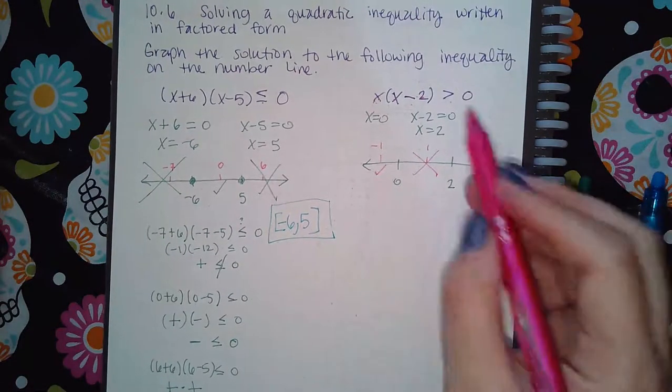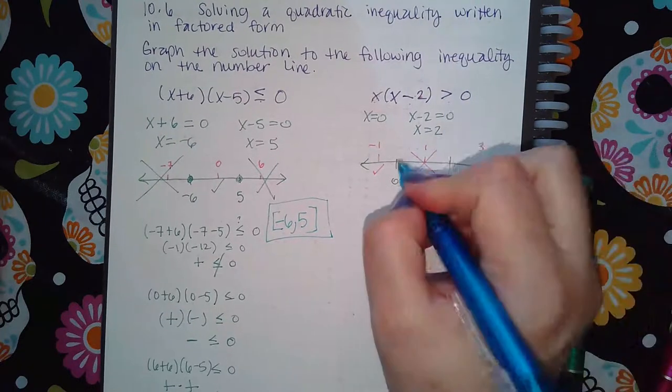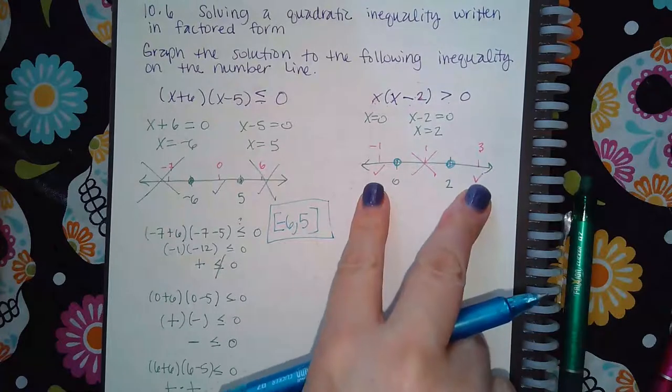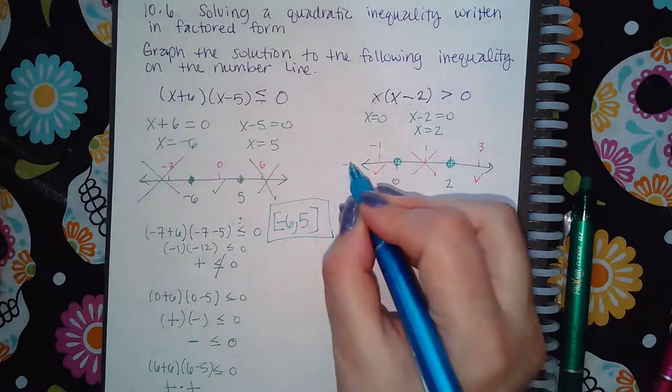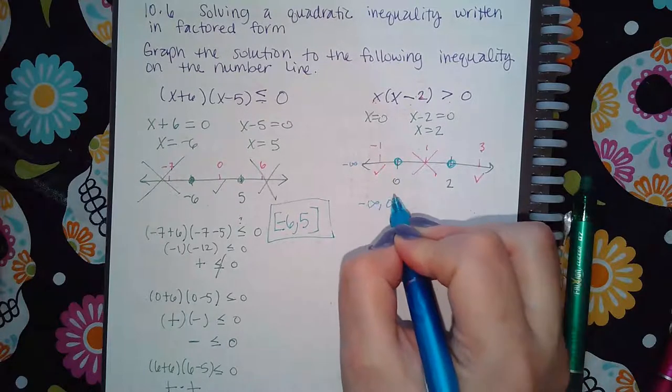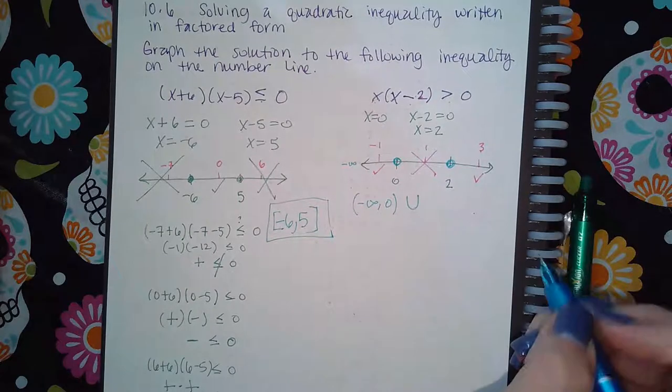Now here, there is no bar under here, which means these will have open circles. And so I got two parts as my answer. So I got from negative infinity to the zero, but there's an open dot. So I have parentheses. And then because it's two pieces, I have to use the union.